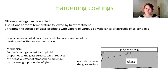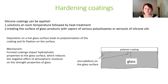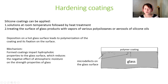Polymer silicon coatings can be applied using solutions at room temperature followed by heat treatment, or by treating the glass surface with vapors of various polysiloxanes or aerosols of silicon oils on a hot glass surface. This leads to polymerization of the coating and fixation to the glass surface.